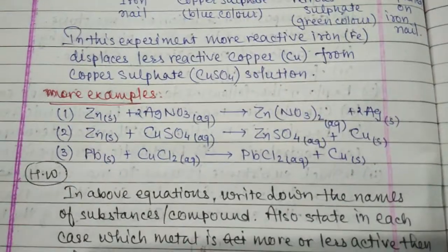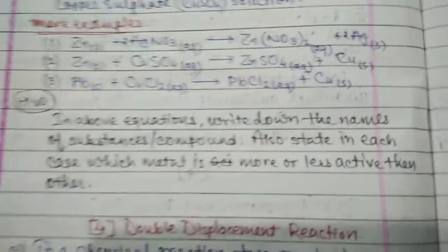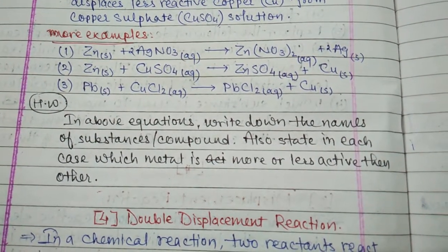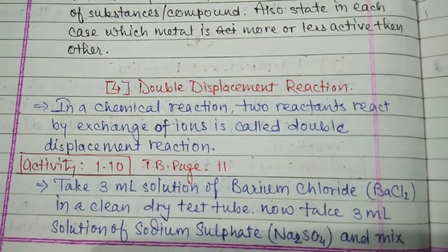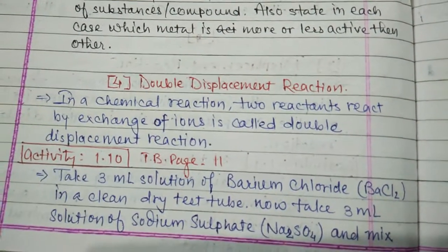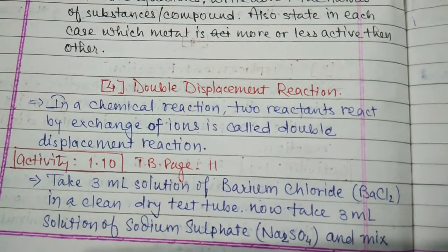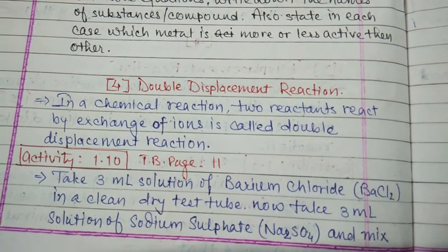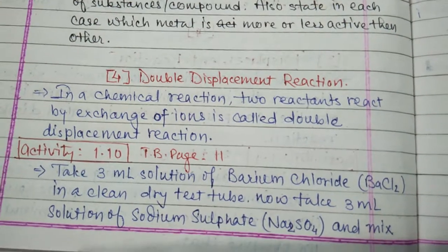There are some more examples of displacement reactions. Now, the fourth type is double displacement reaction. In a double displacement reaction, two reactants react by exchange of ions — the positive ion of one compound exchanges with the positive ion of the other, forming two new compounds.